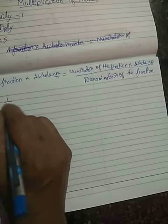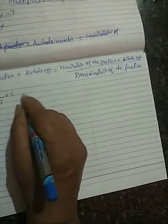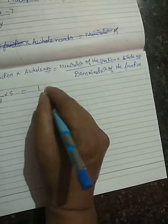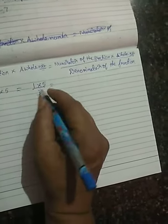Given 1/3 × whole number 5, fraction × whole number equals numerator of the fraction × whole number divided by denominator. So numerator is 1, times 5 equals 5, divided by 3.